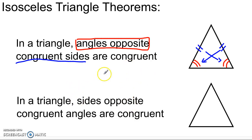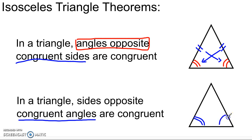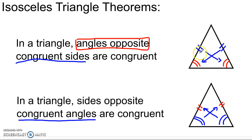Now this works in the reverse direction — what we call the converse in mathematics. It says that if you have a triangle, the sides opposite congruent angles are congruent. So this time it's the angles that we know are congruent. If this angle is congruent to this one, then looking across from them — up in this direction and up in this direction — we'll find a pair of congruent sides.